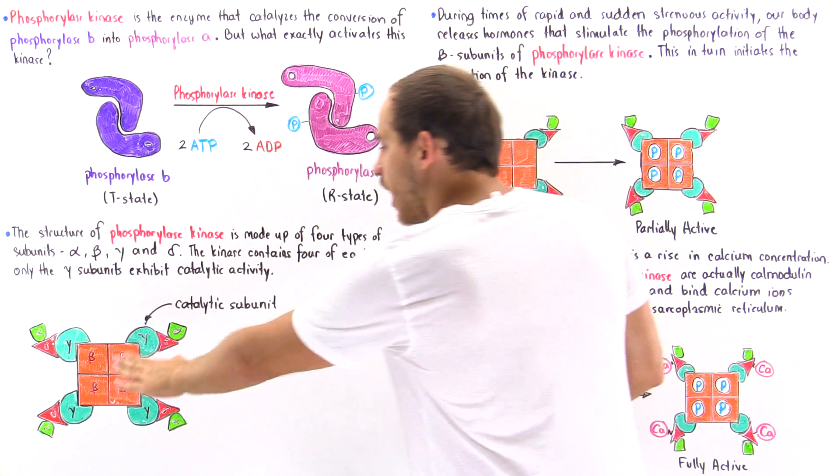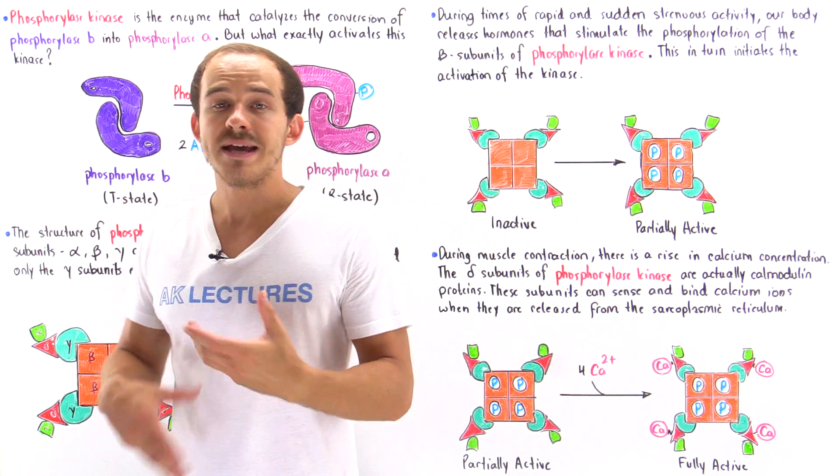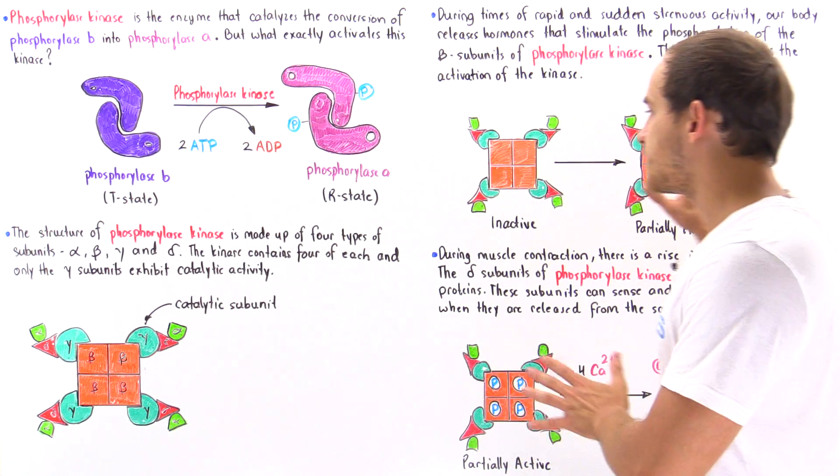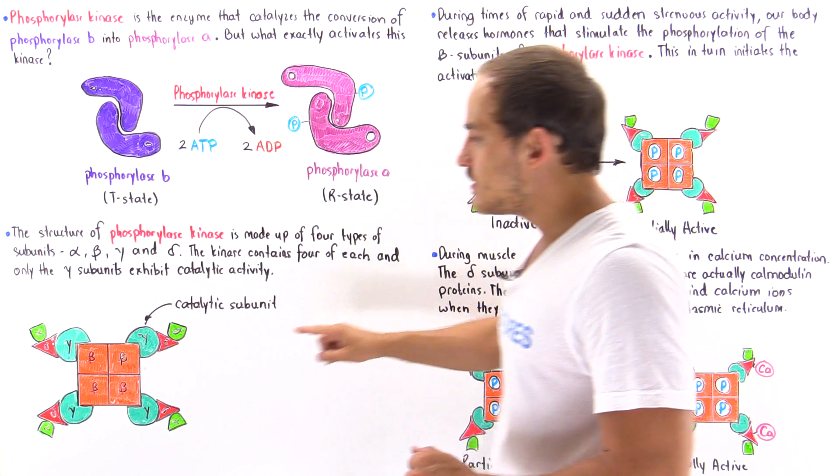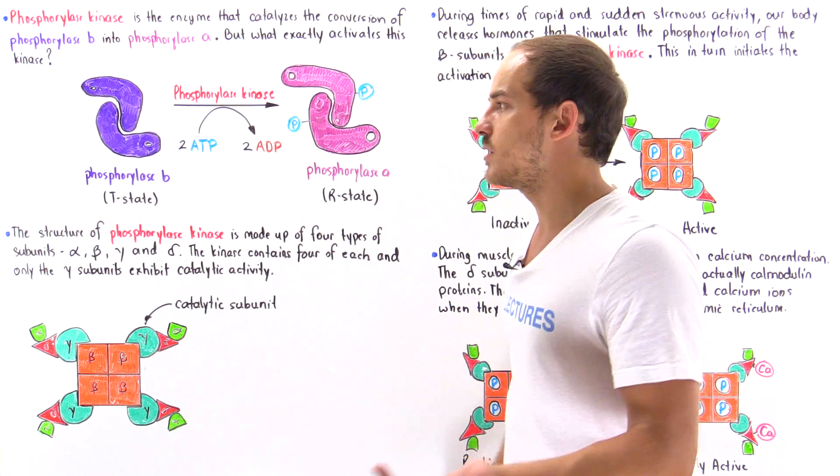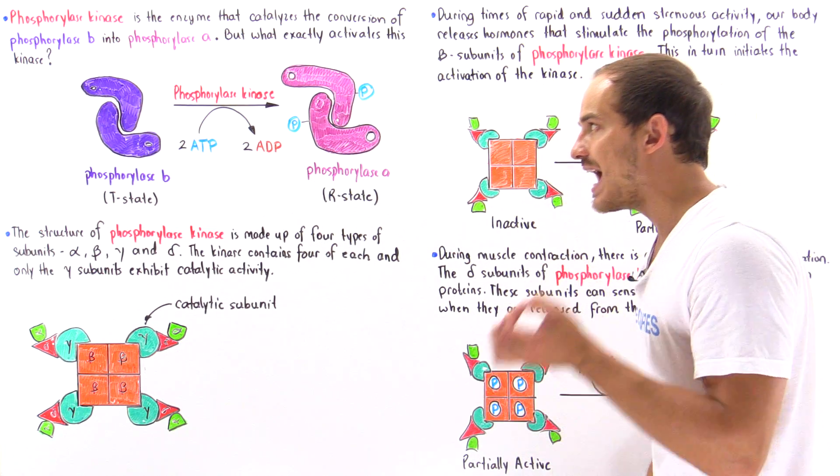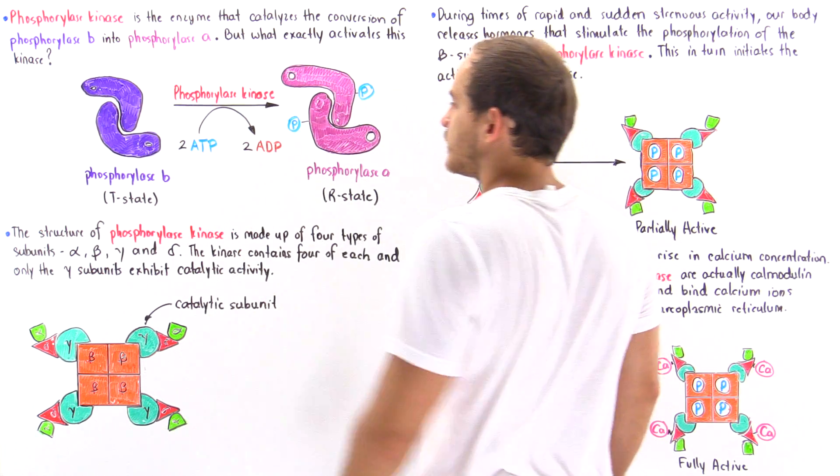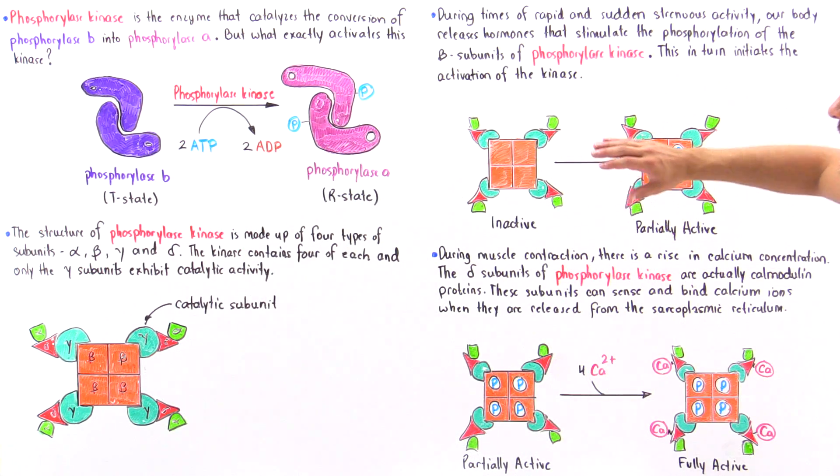But the other three subunits basically have regulatory abilities. And as we'll discuss in just a moment, it's the beta subunits and the delta subunits which are ultimately responsible for fully activating the phosphorylase kinase.